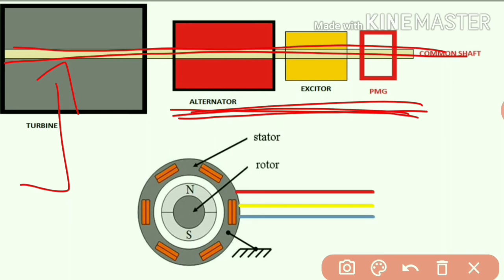So in this, the PMG is also there. So if common shaft rotates, that means PMG's rotor is going to rotate. Now let's see what's happening inside the permanent magnet generator.